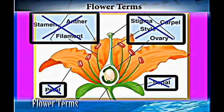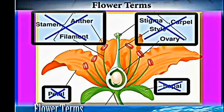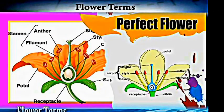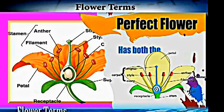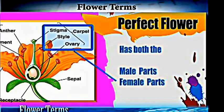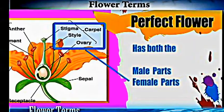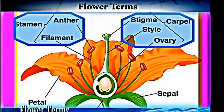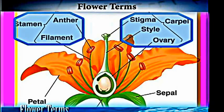Another term we can use is a 'perfect flower.' A perfect flower is a flower that has both the male and the female reproductive parts. That is what we refer to as a perfect flower.